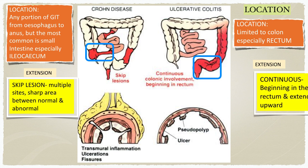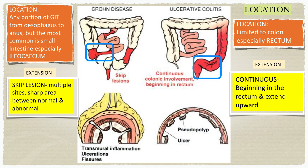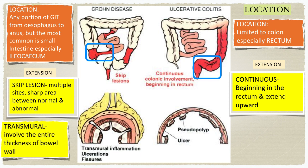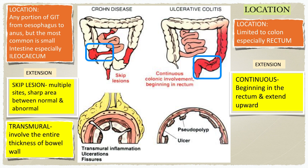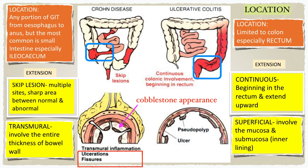Ulcerative colitis is a continuous disease starting at the rectum area, limited to the colon, and extending upward — that's why it is named ulcerative colitis. Crohn's disease is a transmural disease that tends to develop deep ulceration and fissures, causing a cobblestone appearance of the mucosa. While in ulcerative colitis, it is a superficial disease with the formation of pseudopolyps.